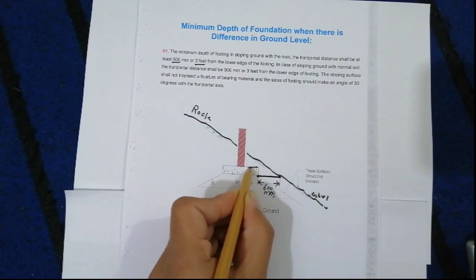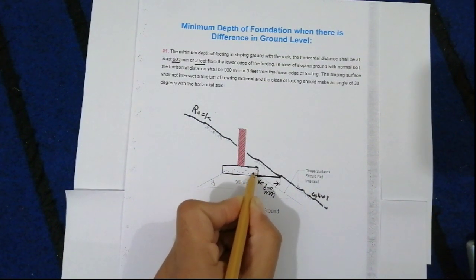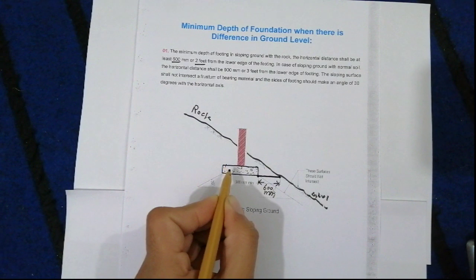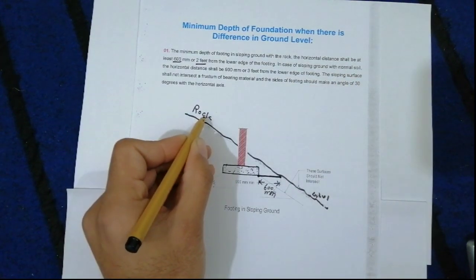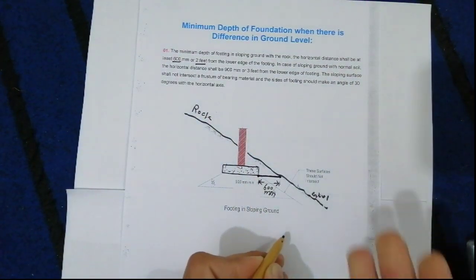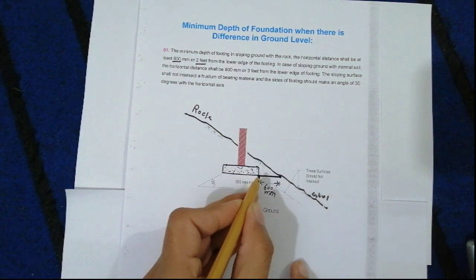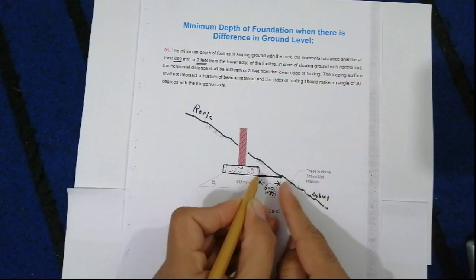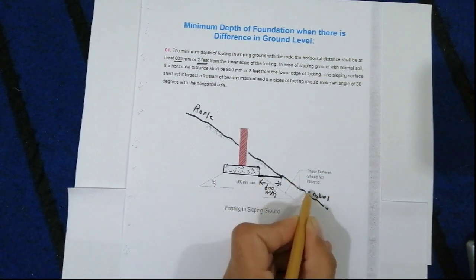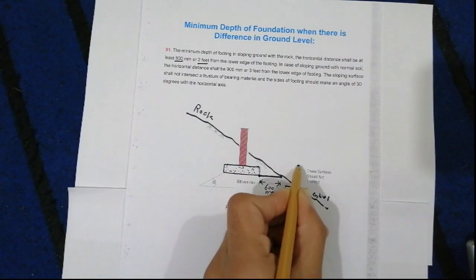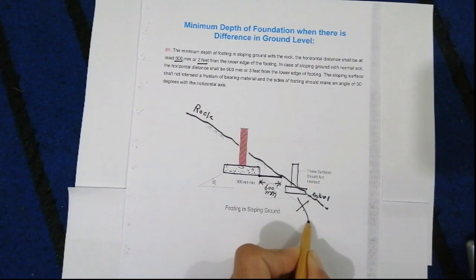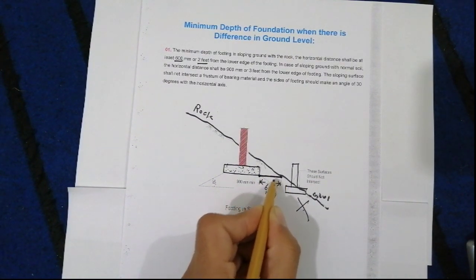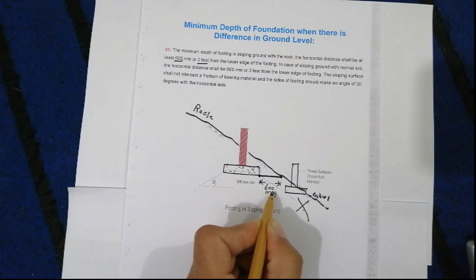This is a very important topic. If you don't keep this space and place a column with a footing at the same level on sloping ground, that is 100% wrong. The horizontal distance in rock should not be less than 600 mm from the lower edge of the footing.